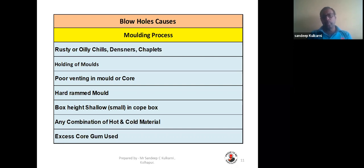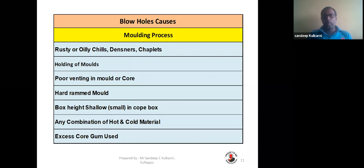Poor venting in the mold or core is a key issue. When metal is poured, all air or gases inside the mold must escape, and they need a proper path — provided through venting. Vent size and location must be adequate; inadequate venting causes blowholes. A hard-rammed mold reduces permeability, making it harder for air or gases to escape, which is another reason for blowholes. Box height that is too shallow or small in the cope box reduces the pressure head below the required three to four inches.